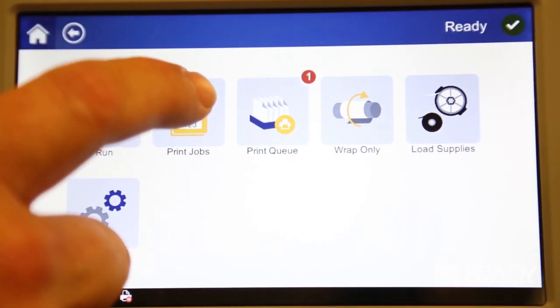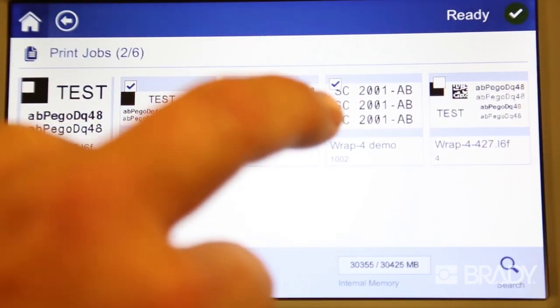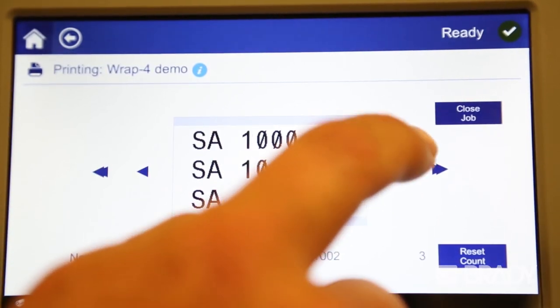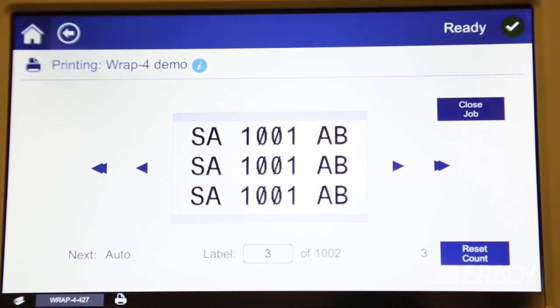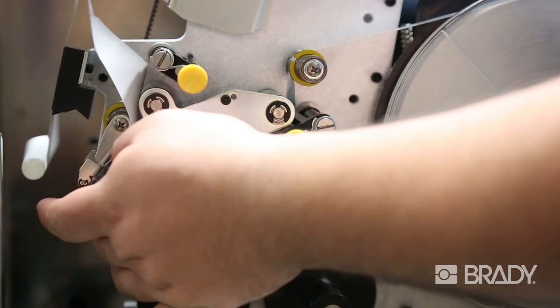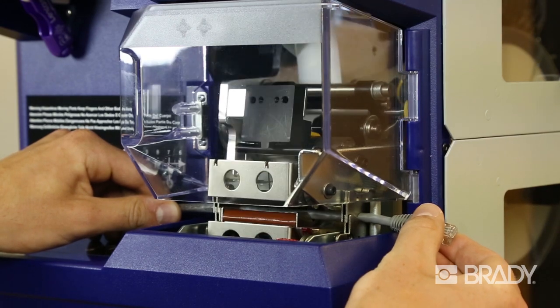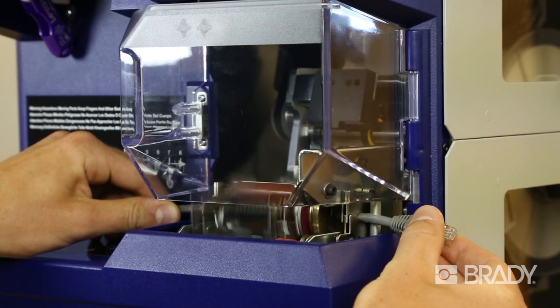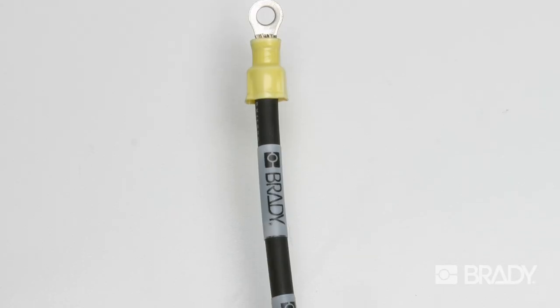Just design and send your label print job to the Raptor A6500, select the print job using the intuitive color touchscreen interface, load the appropriate label materials for the job, and insert the wire to be labeled. The Raptor A6500 does the rest, printing and applying the label.